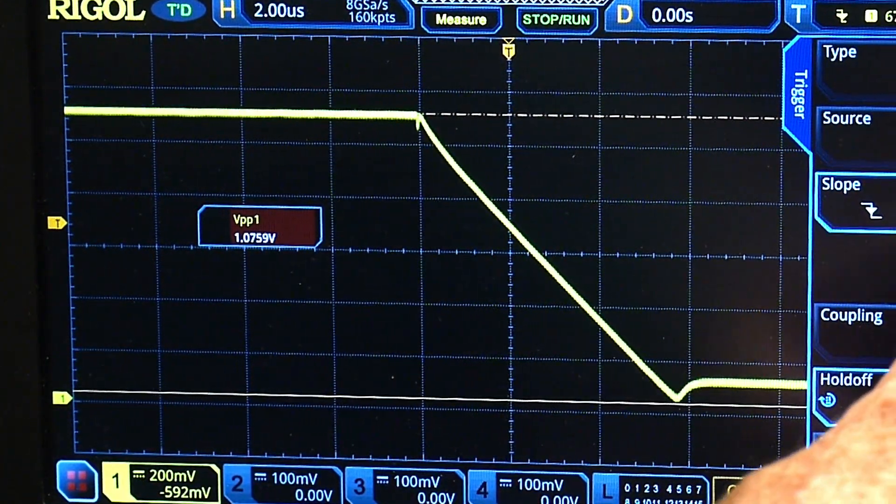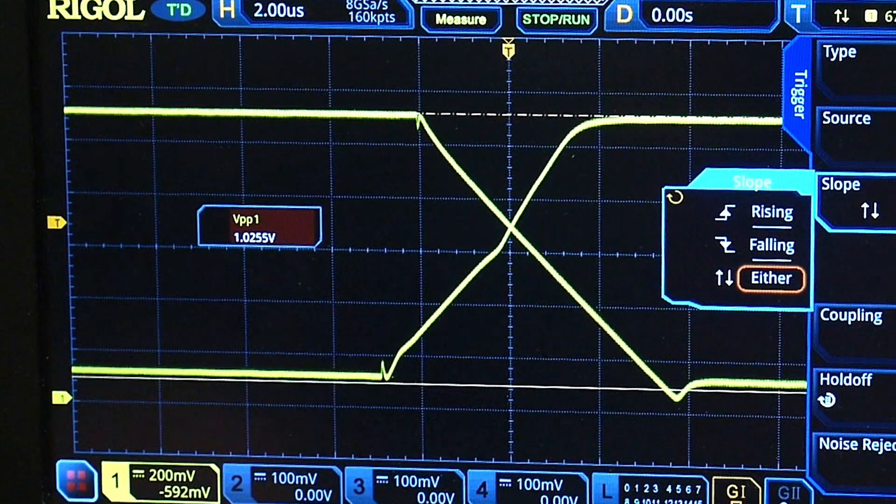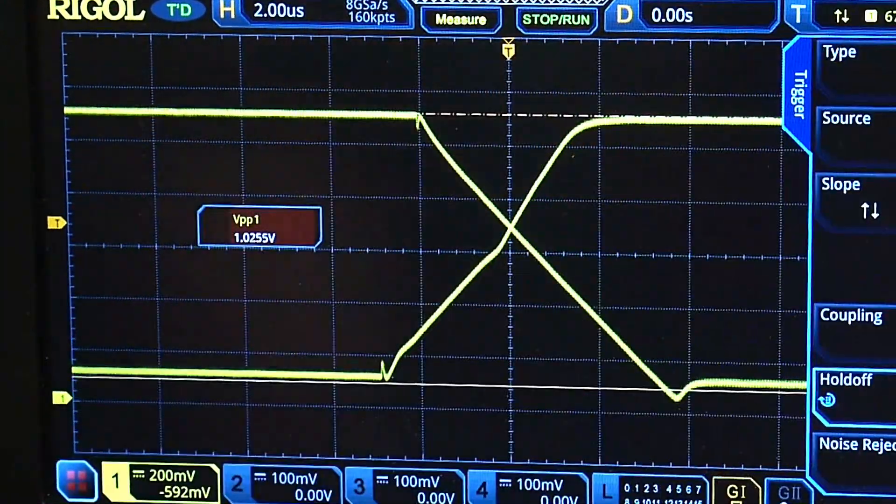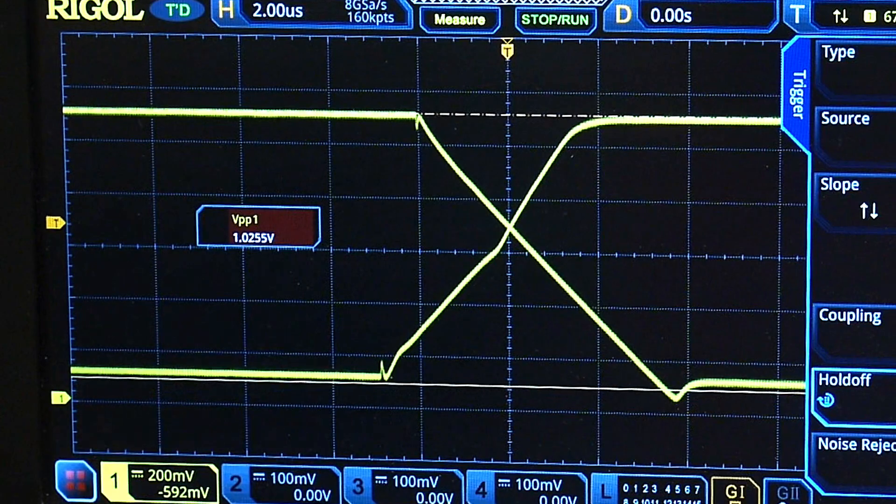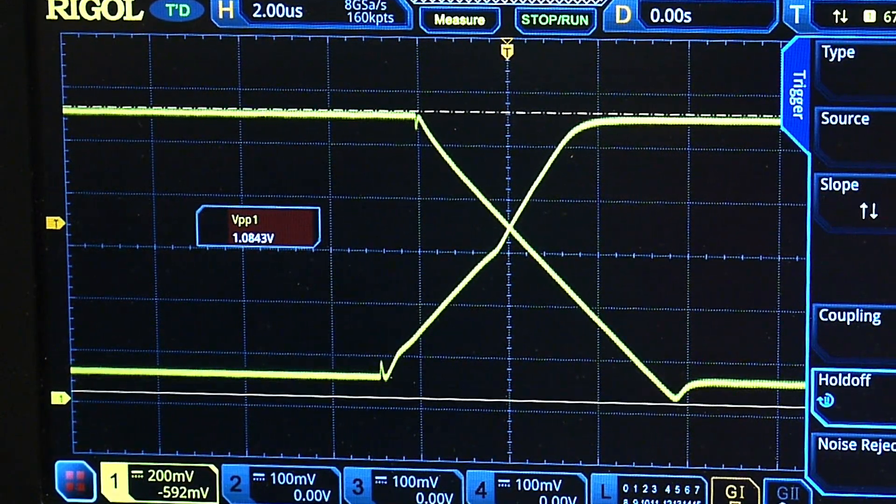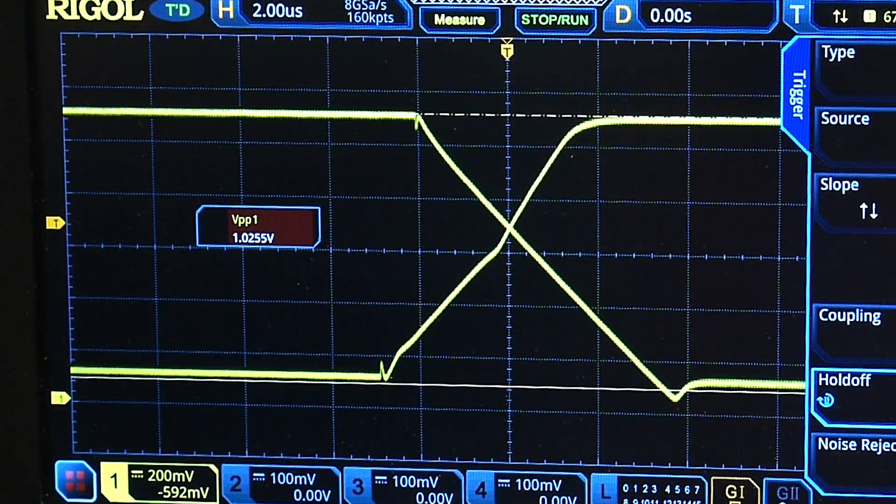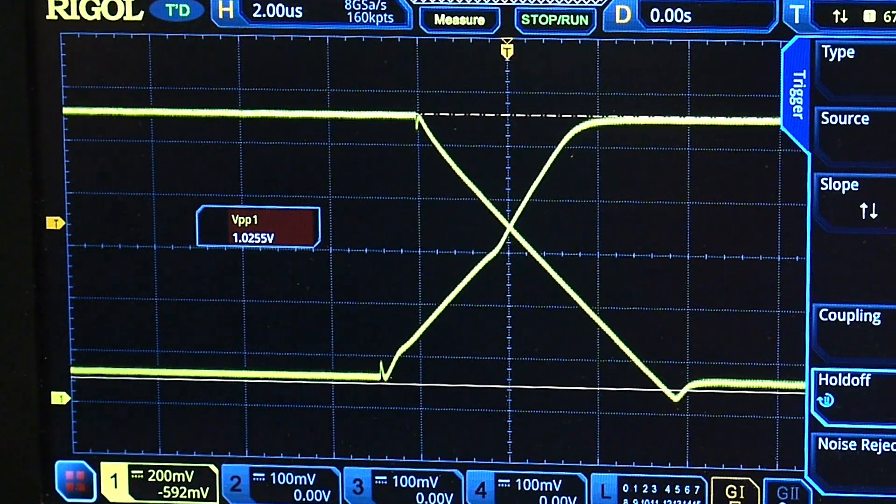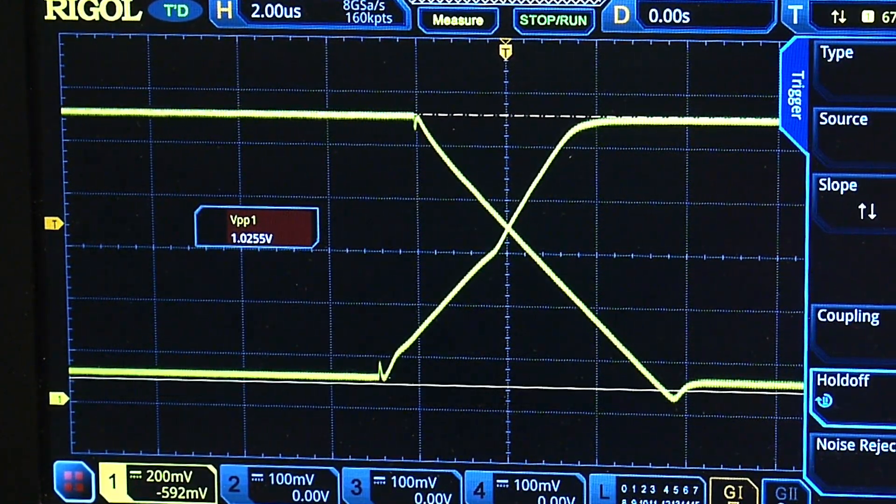But yeah, let's see. We can go either way. So yeah, the rising edge is just a bit weird. Just a bit weird. Anyway, don't know why that is, but hey, it works down to 1.8 volts. So, you know, you get what you get.